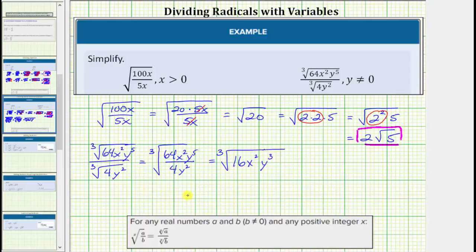Now to continue simplifying, because we have a cube root, we look for perfect cube factors of the radicand. Well, the prime factorization of 16 is 4 factors of 2. So we have 2 times 2 times 2 times 2. Notice how here we have 3 equal factors of 2.